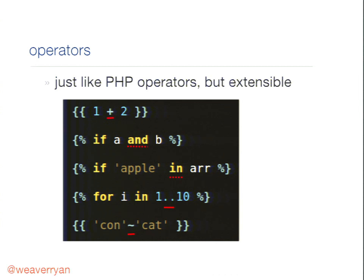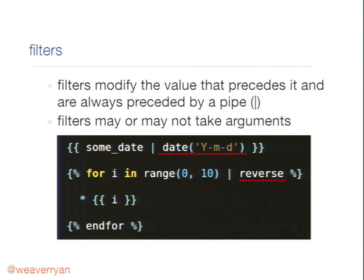Twig also has operators, exactly like PHP, plus some nice additions. There's plus, and (equivalent to double-ampersand), an 'in' operator similar to PHP's in_array(), and a dot-dot range operator — 'one dot dot ten' turns into an array of one through ten. The tilde is concatenation, like PHP's dot operator. Filters are one of the first different things in Twig. They're very easy and make your templates really powerful. Basically, you have a value on the left, pipe it through a filter. For example, 'some_date | date' — it's exactly like Unix command-line piping — the value goes through the filter, which formats the output.